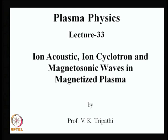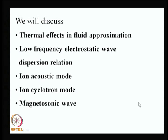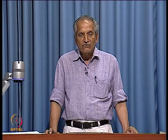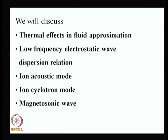In this lecture, we shall discuss electrostatic waves in a magnetized plasma including thermal effects, and we will consider these waves to be of low frequency like the ion acoustic wave, ion cyclotron wave, and magnetosonic wave. Magnetosonic wave is primarily an electromagnetic wave, but it gives rise to charge compression and rarefaction and hence has a very strong electrostatic character as well. We will discuss the validity of the fluid approximation when we include thermal effects, derive a dispersion relation for low frequency electrostatic waves, then discuss the ion acoustic mode, ion cyclotron mode, and then start fresh to discuss the magnetosonic wave.